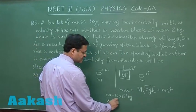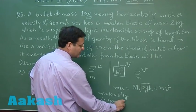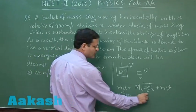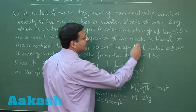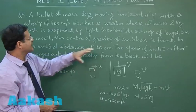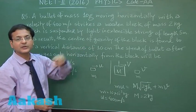The value of capital M has been given to you. Capital M is the mass of the wooden block, that is 2 kg. And this h value is the center of gravity rising up to a distance of 10 centimeters.